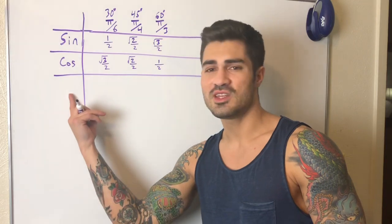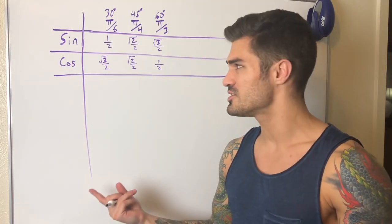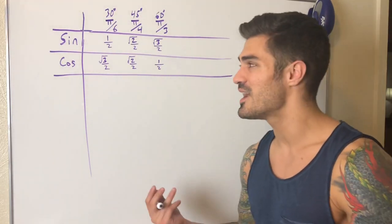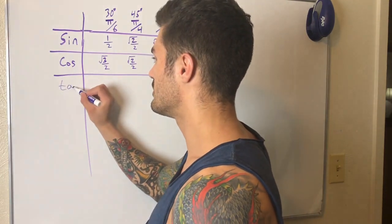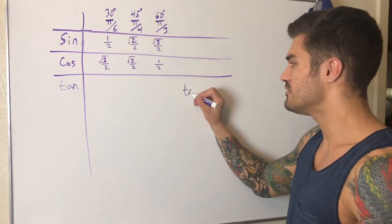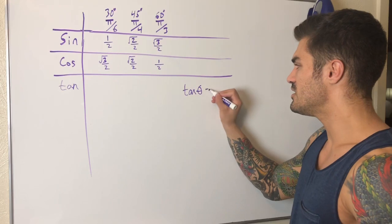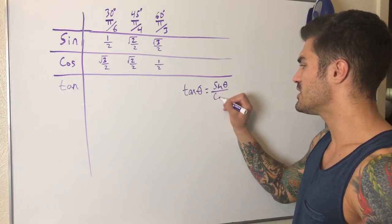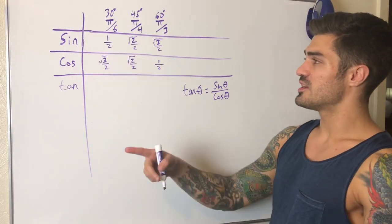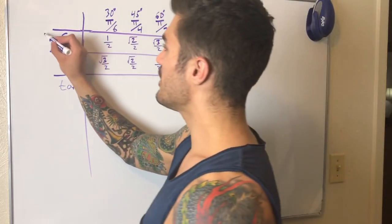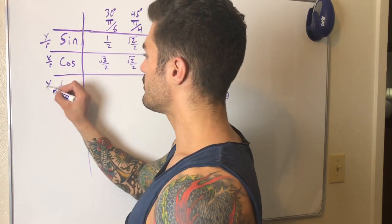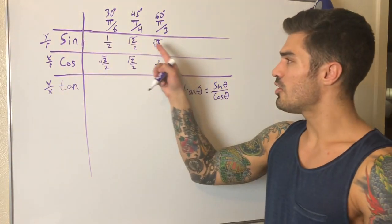But this table isn't really complete yet — what about tangent, cotangent, cosecant, and all that stuff? Well, we can find those using either the definitions or identities. For tangent, there's the identity: tan θ = sin θ / cos θ. We can also use the definition: sine is y/r, cosine is x/r, so tangent is y/x.